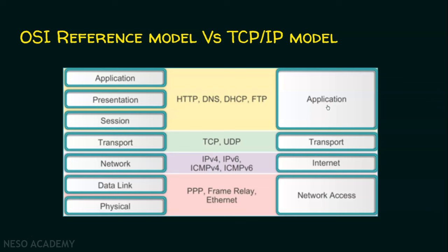The transport layer is the same in both models. The functionalities of the session layer, presentation layer, and application layer are merged into a single layer called application layer. TCP/IP model was developed prior to the OSI model — it is the actual implemented model, while OSI is just a reference model. In some books, the TCP/IP model is shown with five layers. If you want five layers, just break the network access layer into physical layer and data link layer separately.